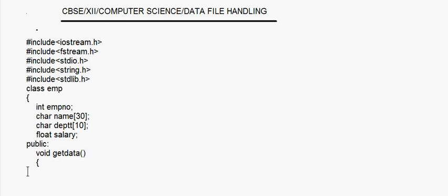Today I'm going to take up data file handling and the topic of modifying a record. So till now we have seen how to read a record from a file, how to write a record, how to search for a record, and how to delete a record. The only operation left now is how to modify an existing record in a file.